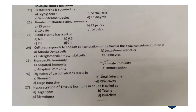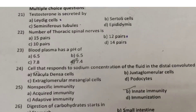For the Physiology MCQs, I am not going to discuss the answers — I want everyone to find the answers and post them in the comments. Question 21: Testosterone is secreted by: A. Leydig cells, B. Sertoli cells, C. seminiferous tubules, D. epididymis. Question 22: Number of thoracic spinal nerves — A. 15 pairs, B. 12 pairs, C. 10 pairs, D. 14 pairs.